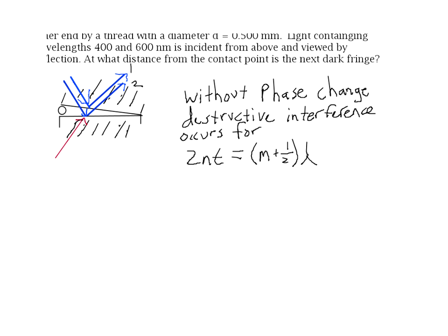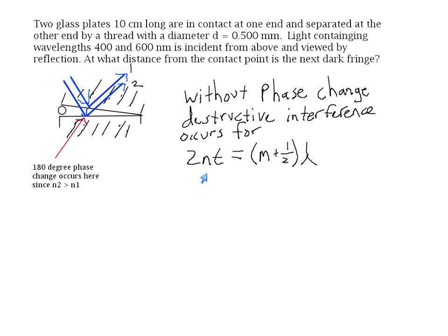We need to find the place where there is destructive interference for both 400 nanometer and 600 nanometer light. Without accounting for phase changes upon reflection, the condition for destructive interference would be that the path length difference — two times the index of refraction of air times the thickness of the air wedge — equals a half-integer multiple of the wavelength: (m + 1/2) times lambda, where m is some integer.